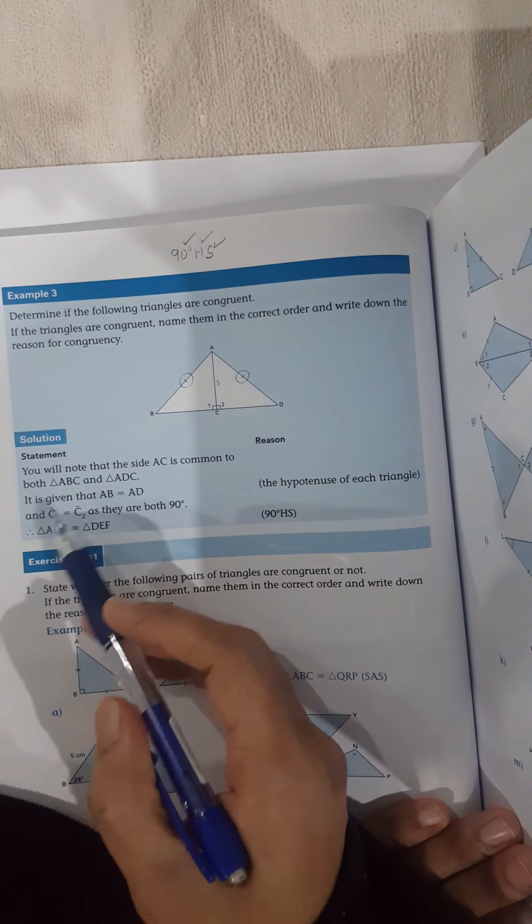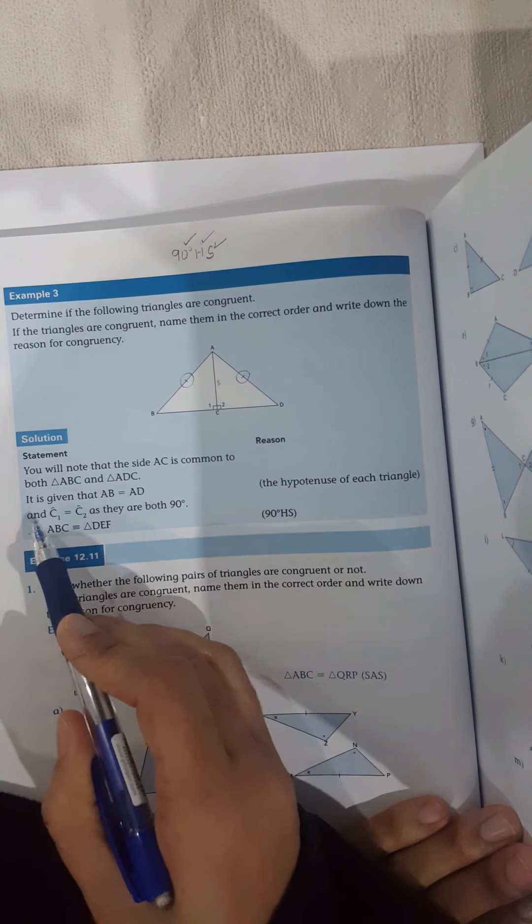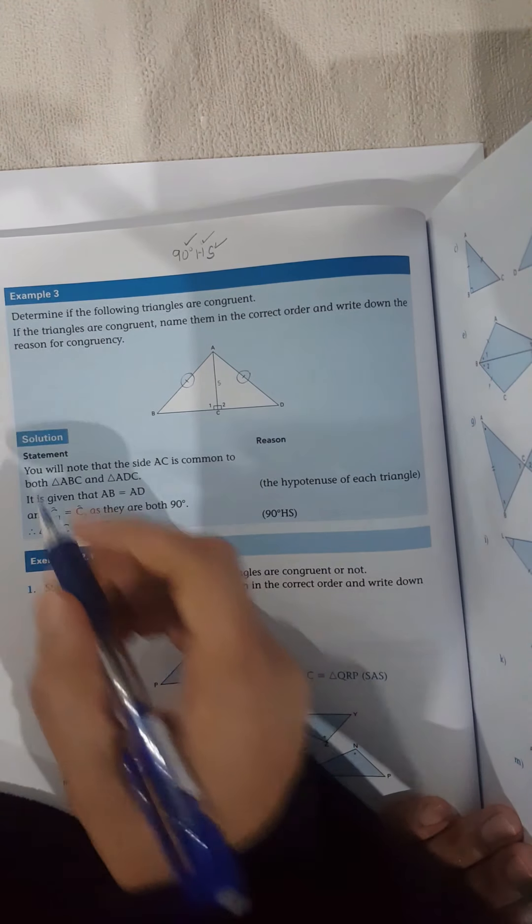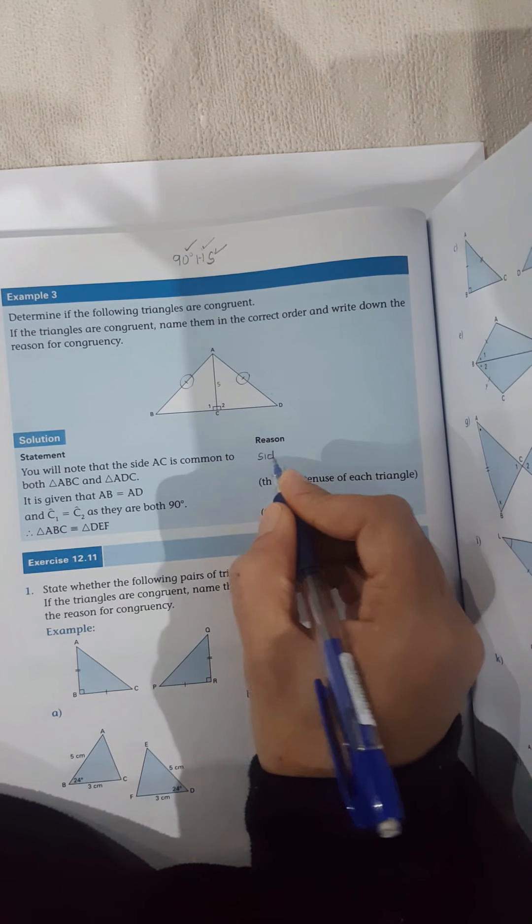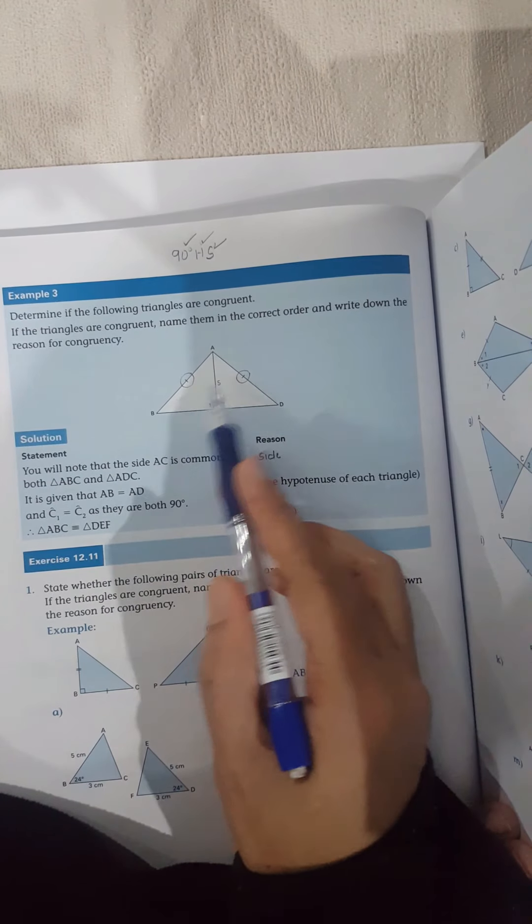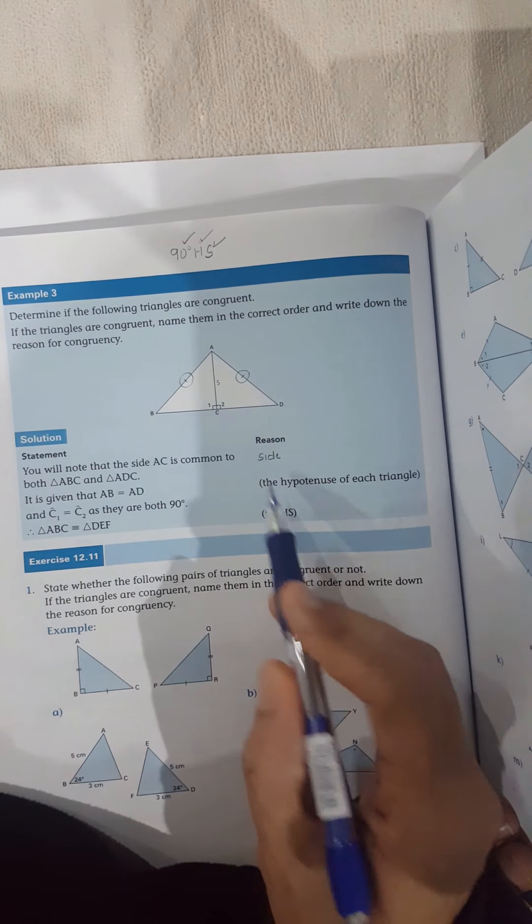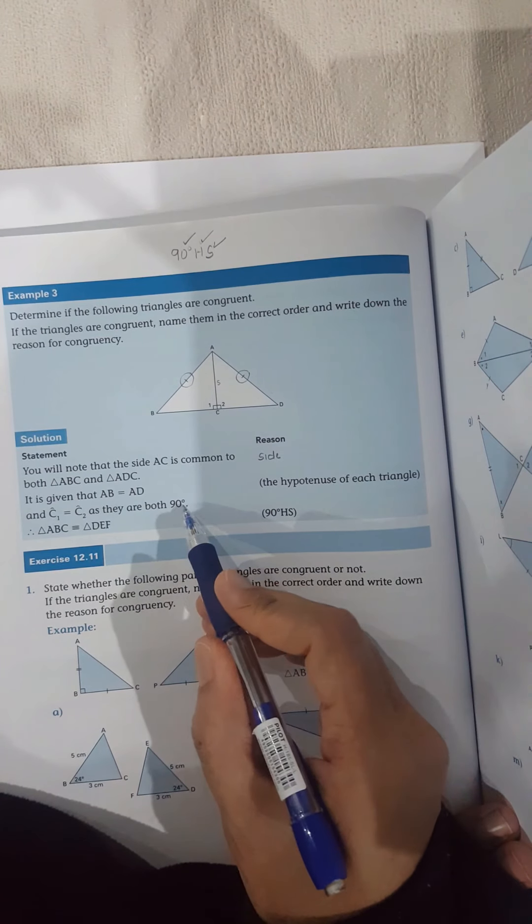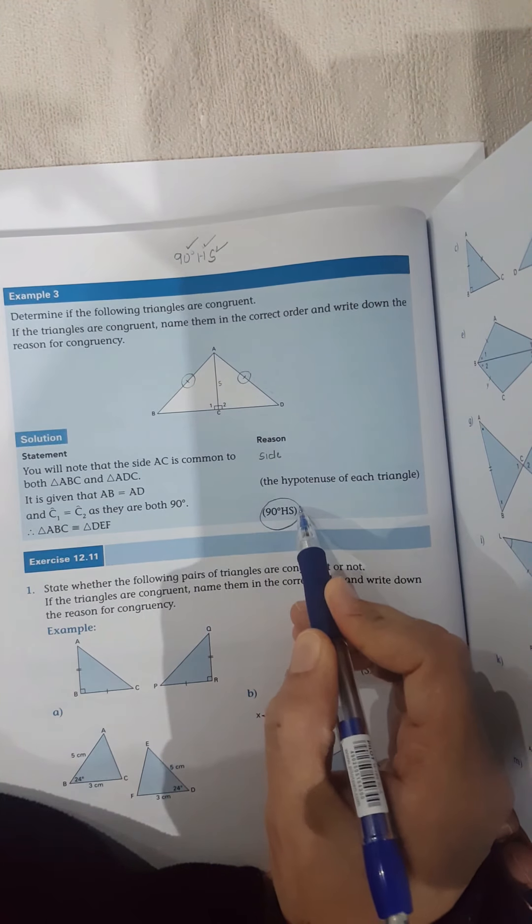Okay, and what is my reason? Okay, the hypotenuse of each triangle. So here's a side. You will note that AC, this is a side. That's equal. The hypotenuse are equal in each triangle. And there's a 90 degree sign. So here's the 90 degrees. So I've proven 90 degrees hypotenuse side.